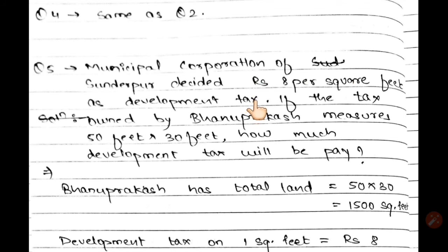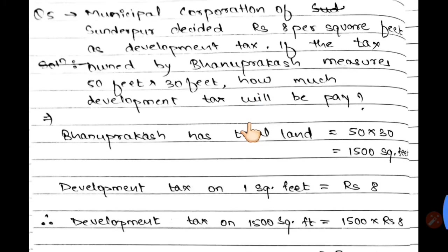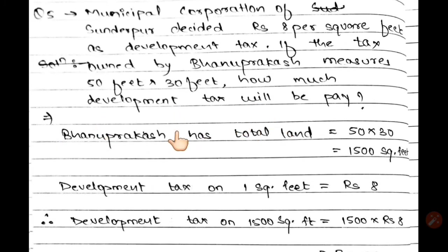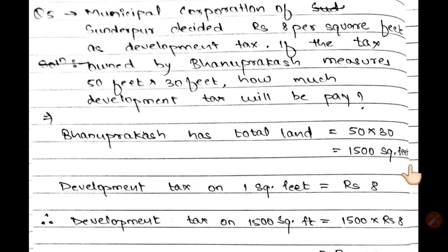Bhanuprakash's land measures 50 feet × 30 feet. The area is 50 × 30 = 1,500 square feet.